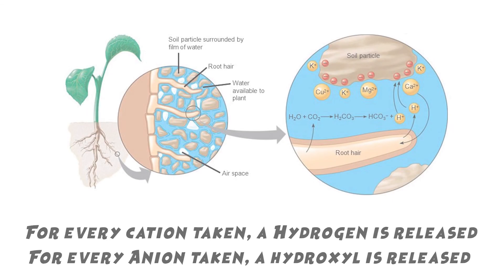When it comes to plants, in very simple terms: when a plant removes a positively charged cation from the nutrient reservoir, it leaves behind a negatively charged anion in its place. And when a plant removes an anion from the nutrient reservoir system, it leaves a cation in its place.